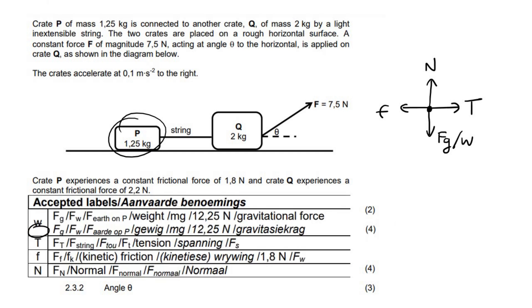Now I just wanted to quickly show you on the memo because learners often ask me, can we use different things? So I said you could use FG or W, but you could have used FG, FW, F Earth on P. Some people even put the size, if you multiply this by 9.8 it'll give you the size.